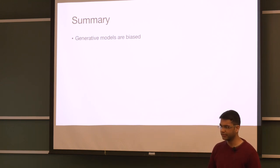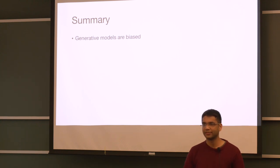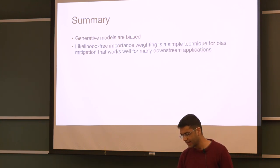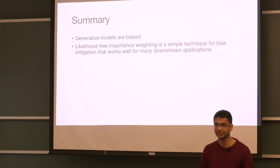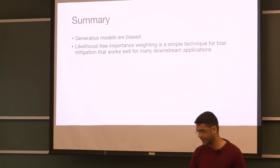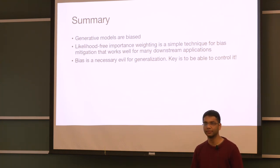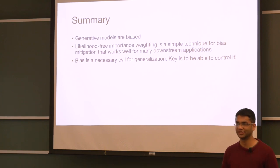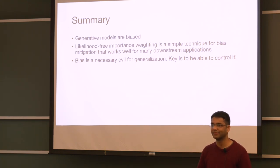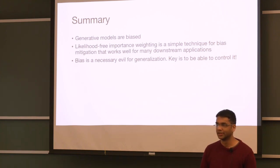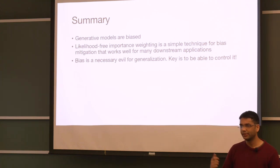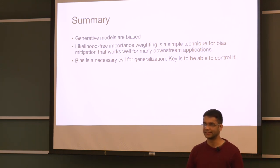To summarize this part of the talk: generative models, in spite of their multiple use cases in the real world, are biased. We showed how likelihood-free importance weighting helps mitigate this bias across a wide variety of applications. As a food for thought: bias is actually a necessary evil for generalization. In this talk I was showing places where bias hurts and trying to correct it, but bias also helps to generalize when you have finite data sets — if you have no bias with respect to your empirical data distribution, you're essentially just doing memorization. By doing likelihood-free importance weighting, there is a tool to control this bias, which makes it more powerful to apply to a wide variety of scenarios.